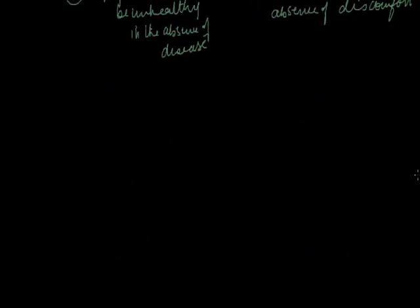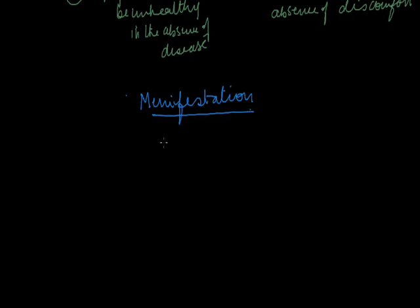The next point about disease is how they are manifested — the manifestation of disease. Manifestation of disease gives rise to various signs and symptoms. Symptoms are evidences of the patient's feeling of being wrong, for example headache, loose motions, wound with pus, discomfort, fever, etc. The signs give an indication of the presence of a particular disease.